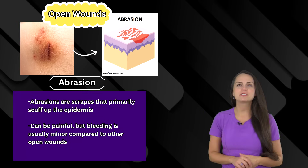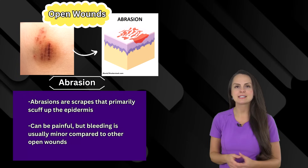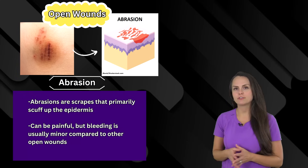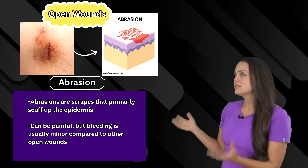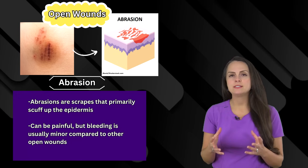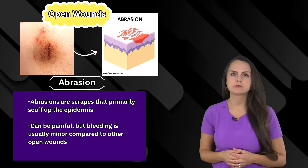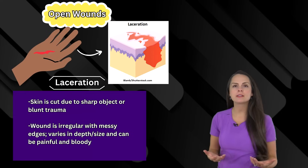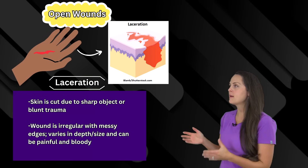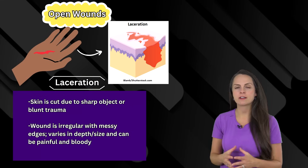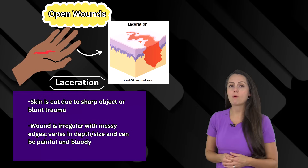Now let's talk about open wounds. First up is abrasion — this is like a scrape on the top layer of skin, the epidermis, and it's usually caused by friction. There tends to be not a lot of bleeding, but it can be quite painful because those nerve endings are exposed. Next is laceration, caused by a sharp object or blunt trauma. Its appearance can be irregular, with various depths and sizes, and it's going to be quite bloody and painful.